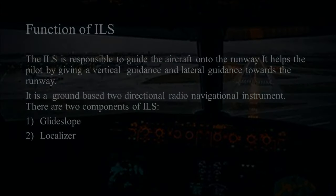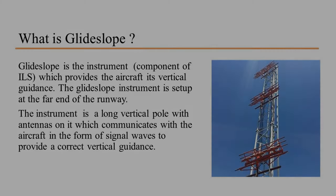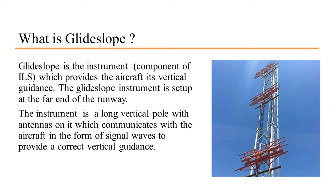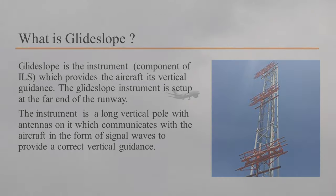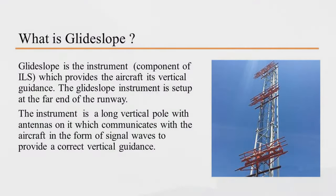The localizer provides lateral guidance — that is, horizontal guidance — to the aircraft. The ground-based machine consists of a short-heighted pole set on the ground with antennas on top, as shown in the image. According to Wikipedia, the frequency of the localizer ranges from 108.1 MHz to 111.95 MHz.